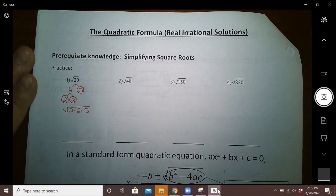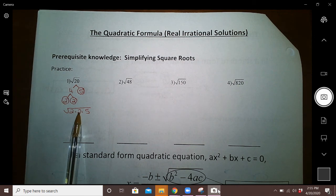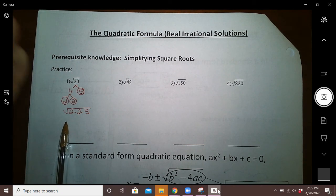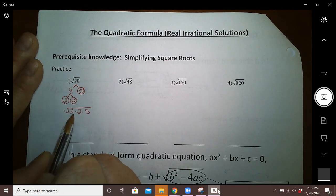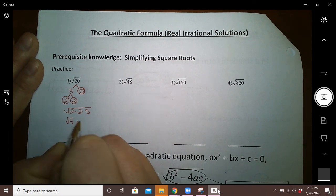Well, the shortcut here is you are looking for pairs. If you have a pair, that pair can be pulled out of the radical or factored out of the radical. I'll do this the longer way so you can see the full explanation. If I put together 2 times 2, that's the square root of 4 times the square root of 5.